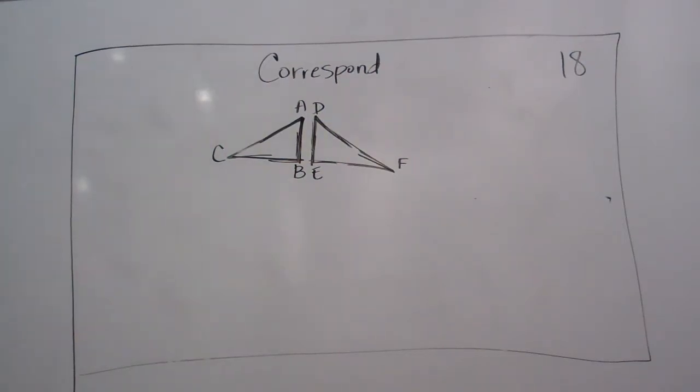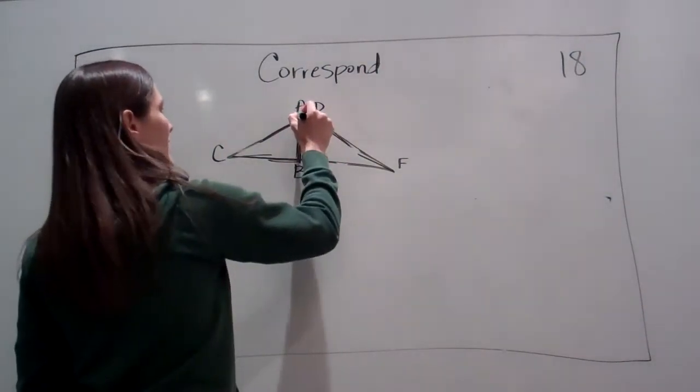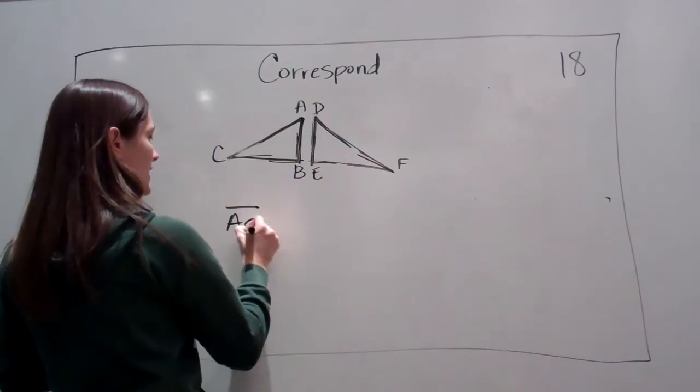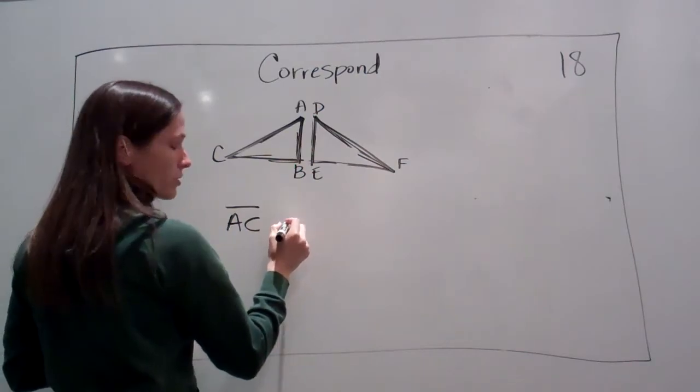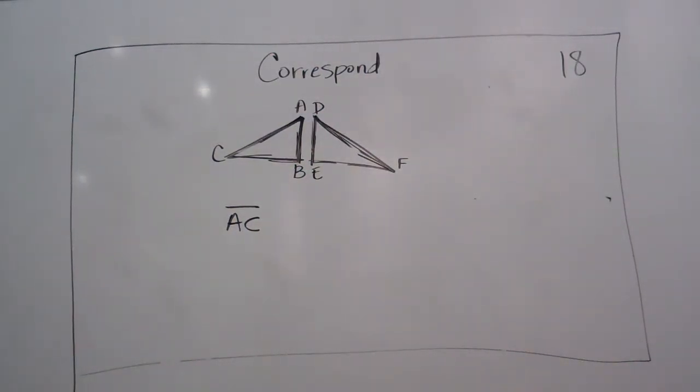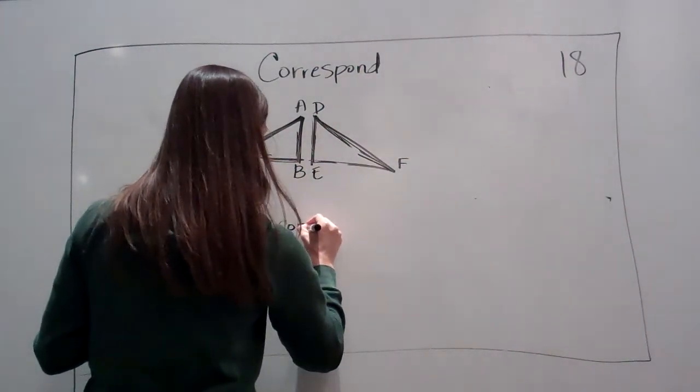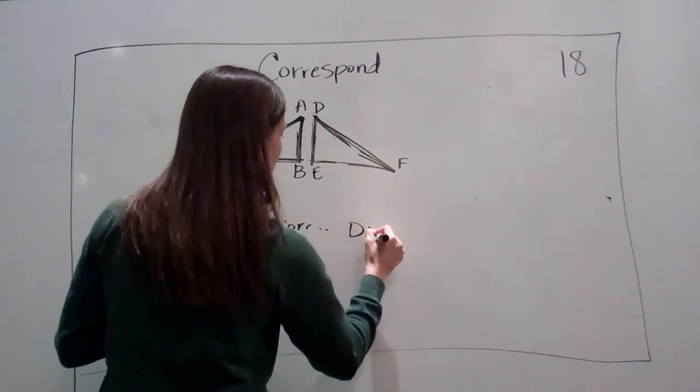Okay. Now, let's talk about corresponding lines. What does line AC correspond with? DF. DF. Very good. It corresponds, I think you just write, corresponds with DF. Very good.